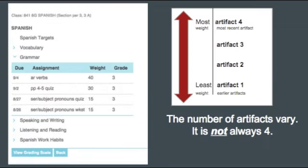You may notice if there are multiple assignments aligned to a target, there is a weight listed. In District 96, we value the most recent grades more than the artifacts collected at the beginning of a learning cycle or unit. TeacherEase has a weighted average that calculates the four or fewer most recent artifacts with different weights. The calculation adjusts with the same weights when there are less than four artifacts gathered for any given target, but you may still see the weight when you click on the learning target.